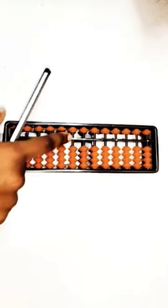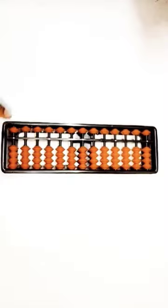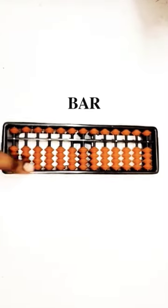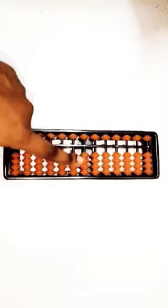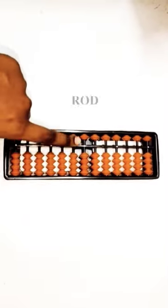The line which splits the upper beads and the lower beads is called the bar, and the line where the upper beads and the lower beads are present is called the rod.